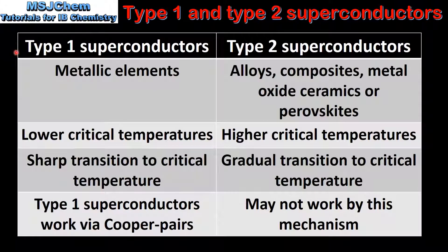We'll end with a comparison of type 1 and type 2 superconductors. Type 1 superconductors are metallic elements, whereas type 2 superconductors can be alloys, composites, metal oxide ceramics, or perovskites. Type 1 superconductors have lower critical temperatures while type 2 superconductors have higher critical temperatures. Type 1 superconductors show a sharp transition to the critical temperature, whereas type 2 superconductors have a more gradual transition. Finally, type 1 superconductors work via Cooper pairs, while type 2 superconductors may not work by this mechanism.